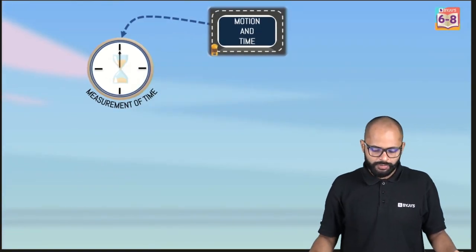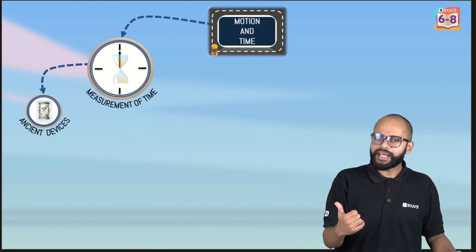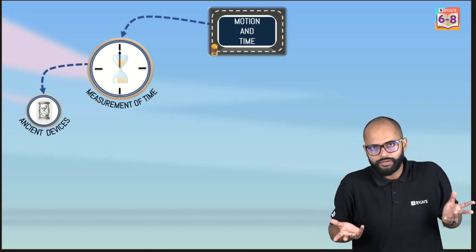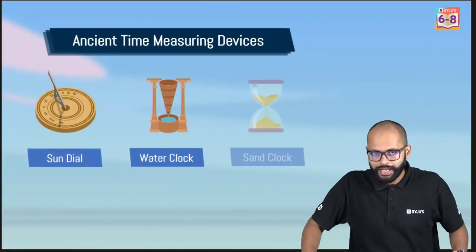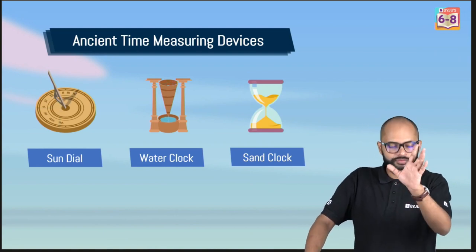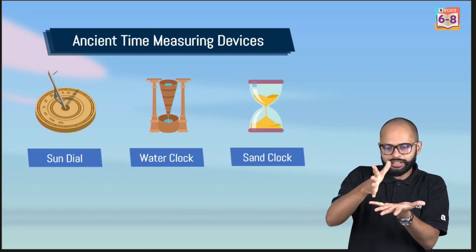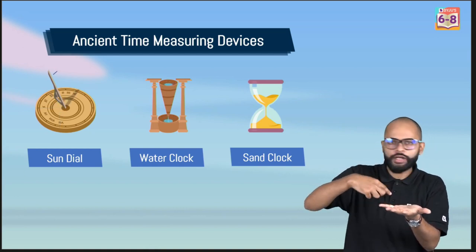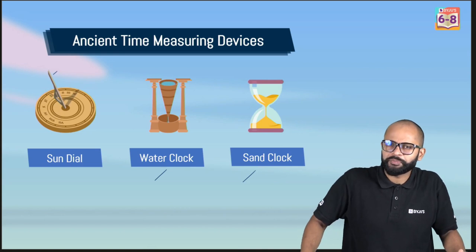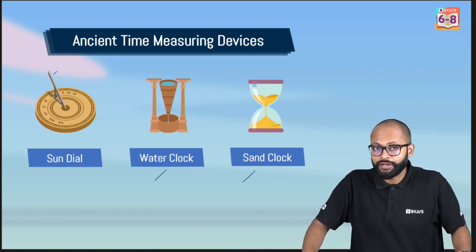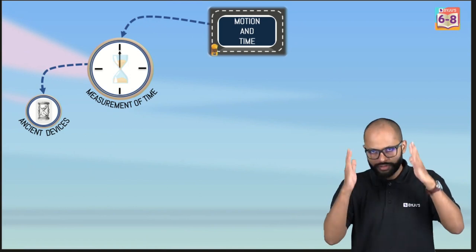Looking at the sun and moon gives a vague idea of time. Ancient devices were also developed. Sundials use the shadow cast by sunlight on a dial beneath to tell the time. Similarly, water clocks and sand clocks were ancient time-measurement devices. So the ancient devices to remember are sundials, water clocks, and sand clocks.